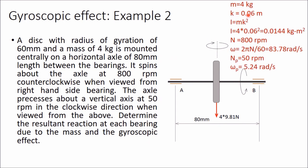The given data: mass is 4 kg, radius of gyration k is 0.06 m. Moment of inertia I = mk² = 0.0144 kg·m². Spin speed is 800 rpm, converting using ω = 2πN/60 gives ω = 83.78 rad/s. The precession speed is 50 rpm, which gives angular velocity of precession ωp = 5.24 rad/s.